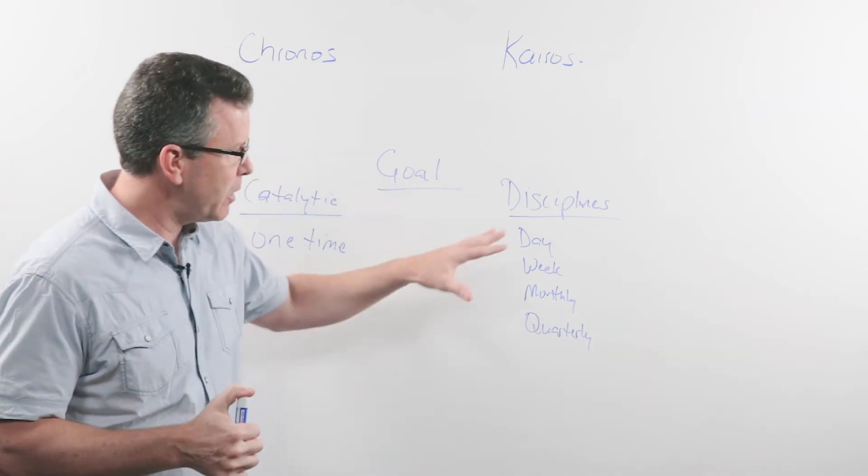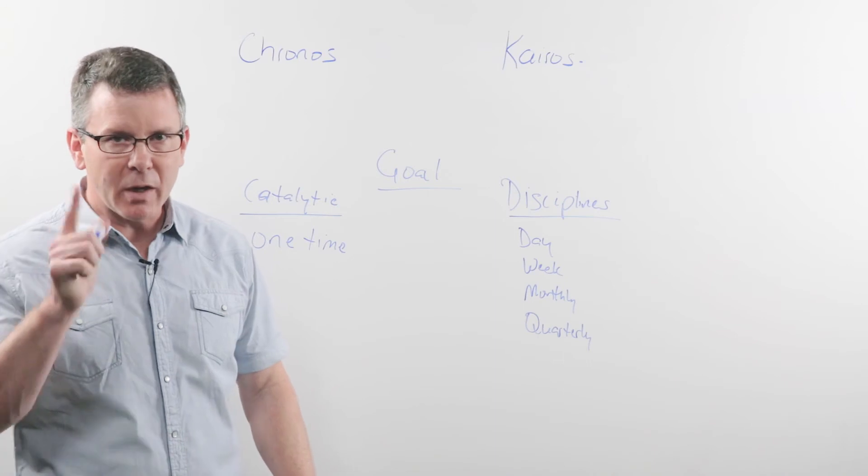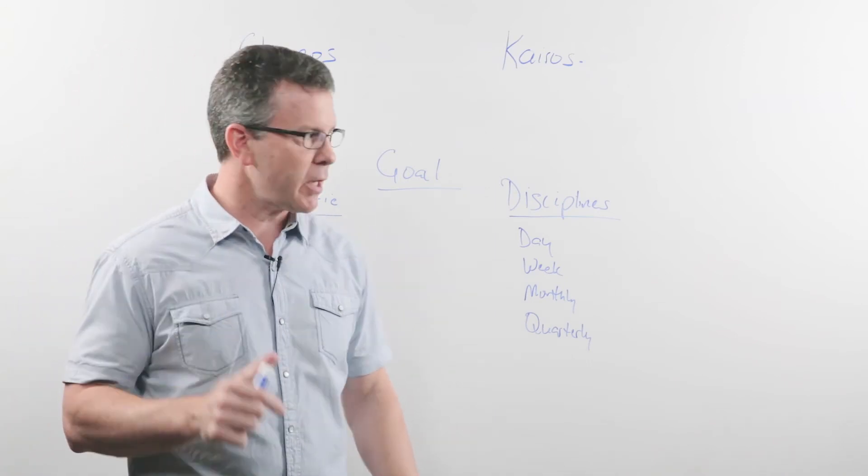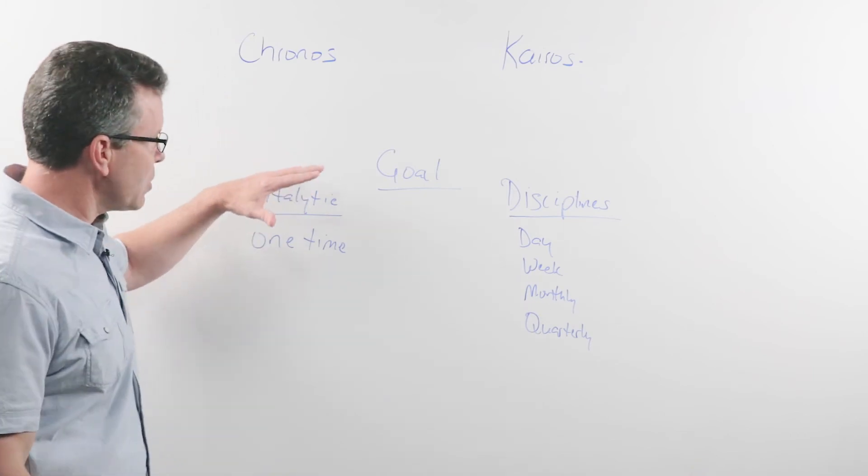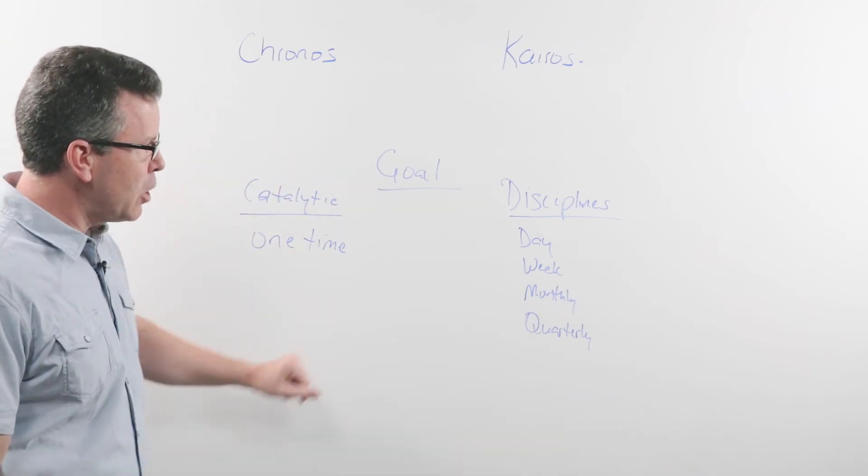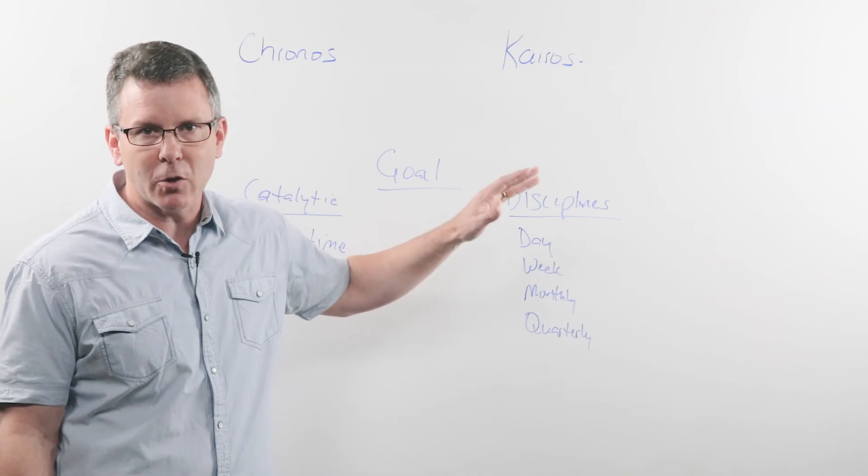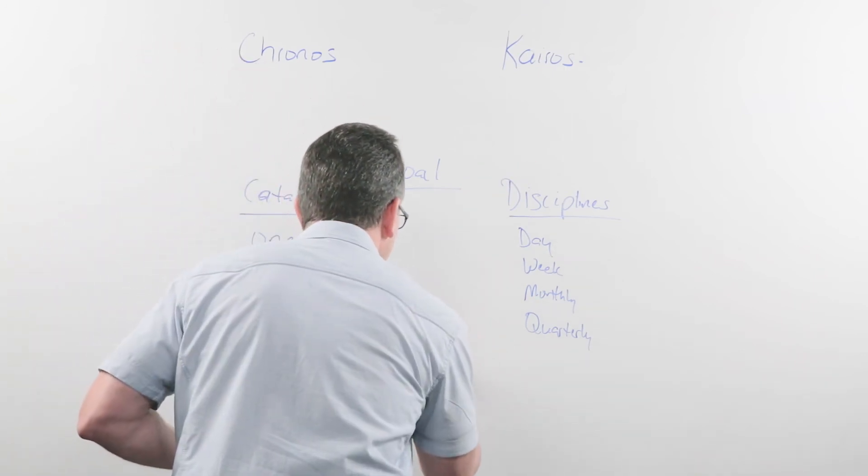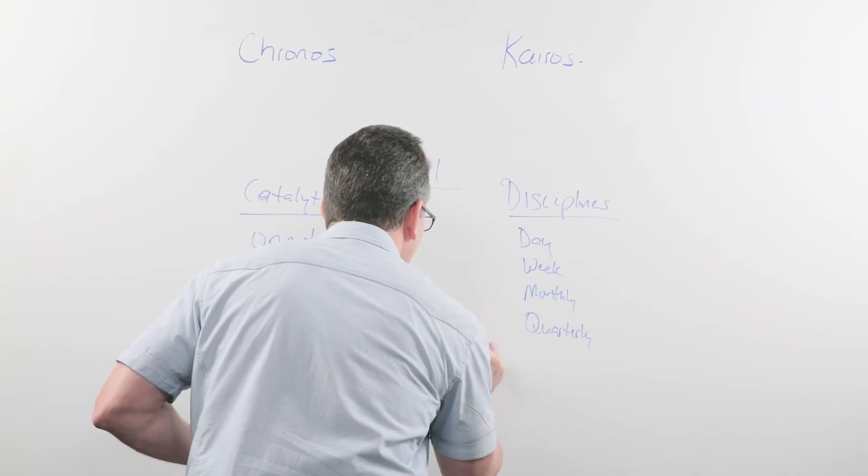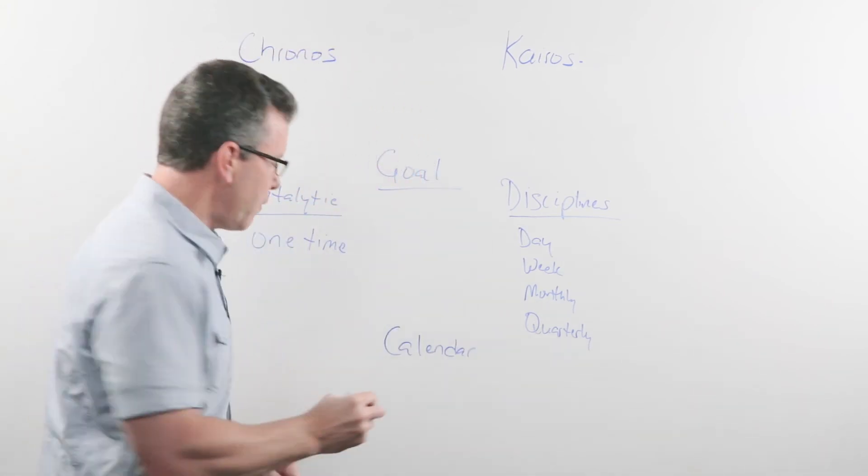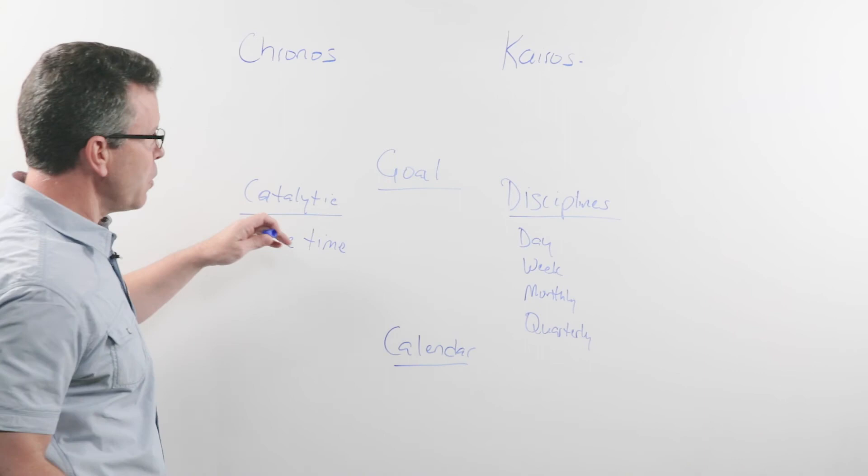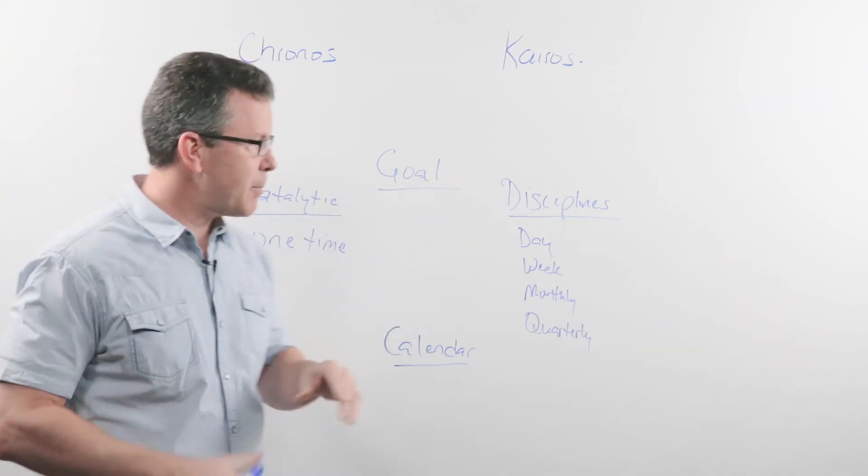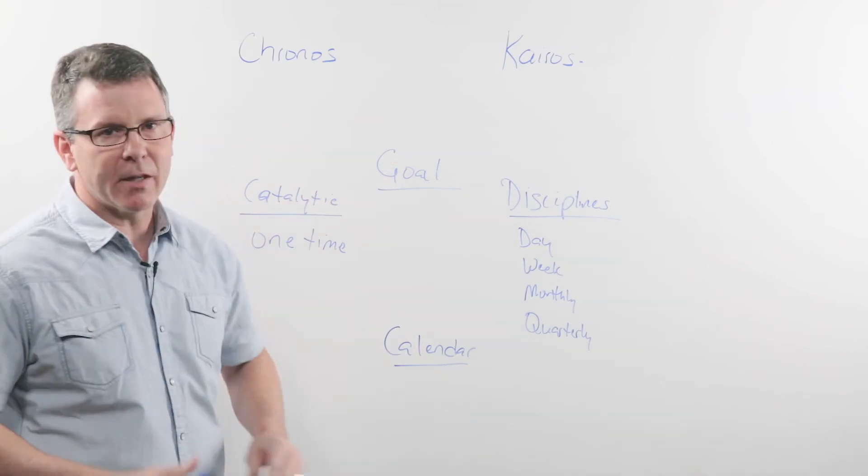Whatever you need to do, there's one last thing that you need to think about when it comes to actually making personal change. You can have all the right decisions here and do these catalytic things, you can have all the right disciplines and say these are the disciplines I'm going to apply to my life, but if you don't put them actually in your calendar they simply won't happen. You've got to have catalytic moments, you've got to have the right disciplines, but in the end you've got to have the time to do it.